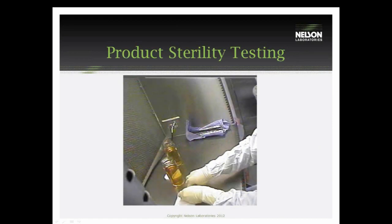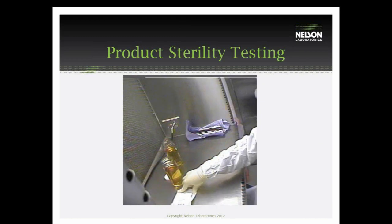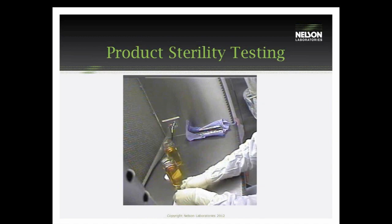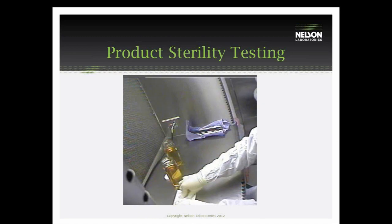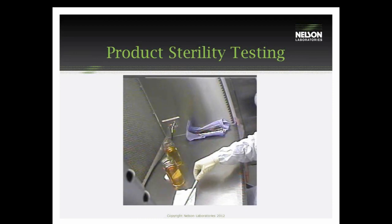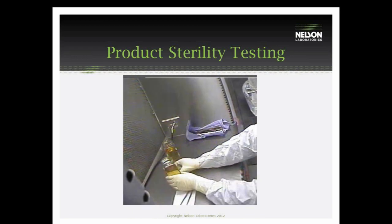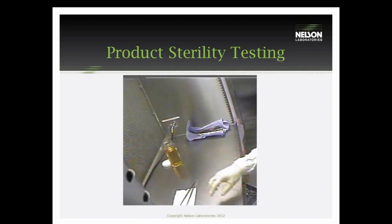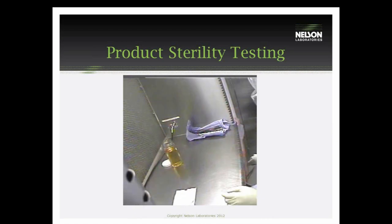This is a small video clip on product sterility testing and how it is performed. Essentially, in the clean room, we will unpackage the device. It will be dropped into one of two medias — a soybean-casein digest media and a thioglycolate media — to accommodate both aerobic and anaerobic growth. The jar of media containing the device will be placed in an incubator and incubated for a minimum of 14 days. The BI sterility testing is performed similarly, and this shows how it is performed — being dropped into the media.